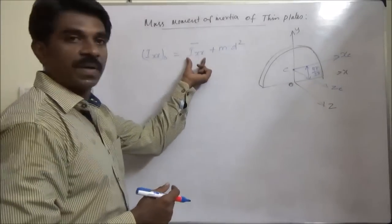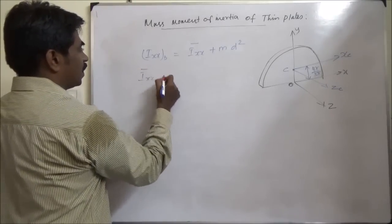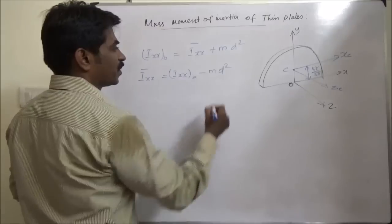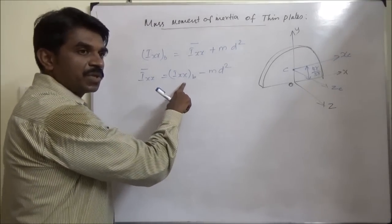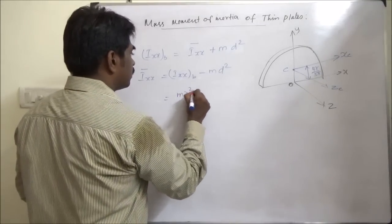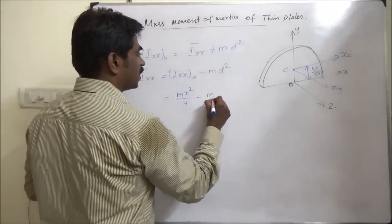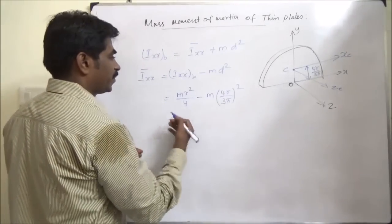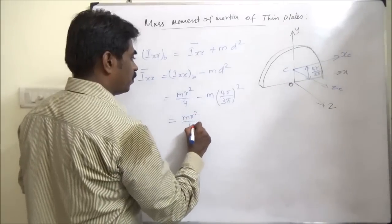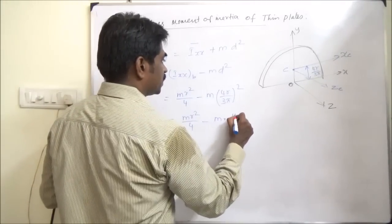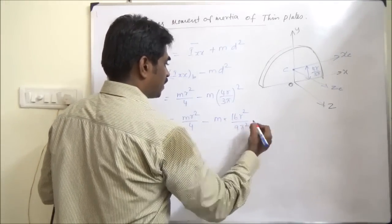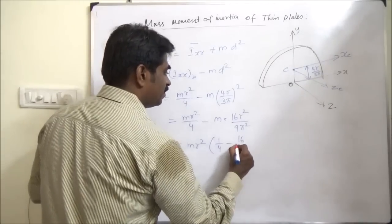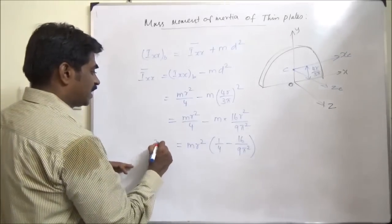Therefore, Ixx_bar equals Ixx_base minus m·d². Here Ixx_base is m·r²/4, and the distance d to the centroid is 4r/(3π). So Ixx_bar = m·r²/4 minus m·(4r/3π)² = m·r²/4 minus m·16r²/(9π²). This gives the centroidal Ixx_bar.